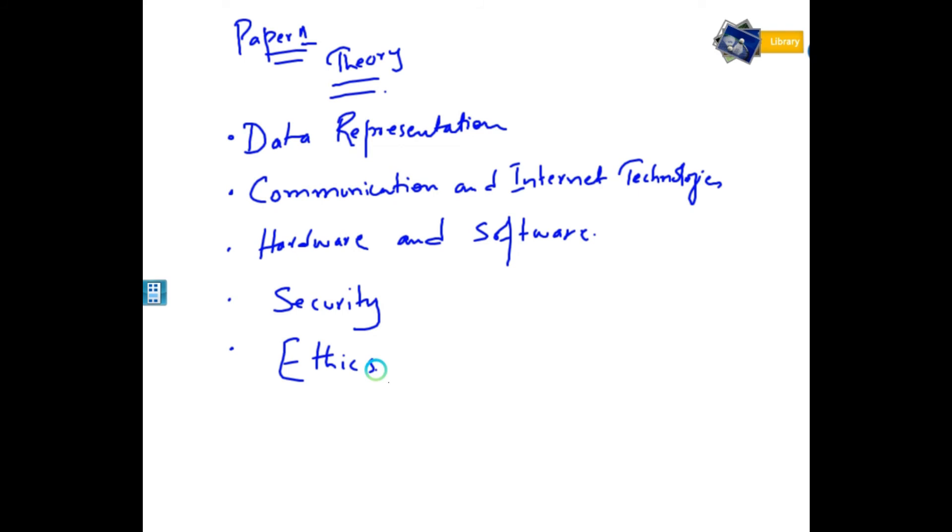Now I will tell you about paper two. In paper two, what do you see? It's about problem solving. So the main content is algorithm, problem, and solving.